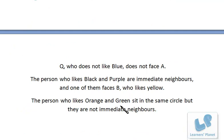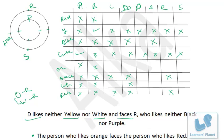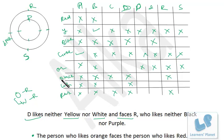The person who likes orange and green sit in the same circle but are not immediate neighbors. We already know A likes green, so green is in the inner circle — therefore orange is also in the inner circle. Cross orange for P, Q, R, S. Similarly, orange and white are in the same circle, so white is also in the inner circle — cross white for P, Q, R, S.